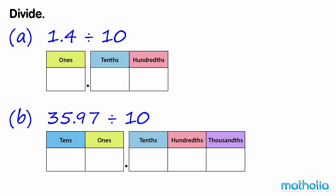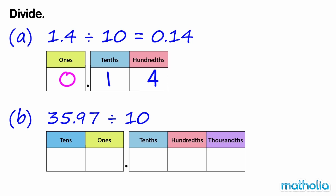Divide. A. 1.4 divide 10. Write 1.4 in a place value chart. We can divide by 10 by shifting the digits one place to the right. 1.4 divide 10 equals 0.14.